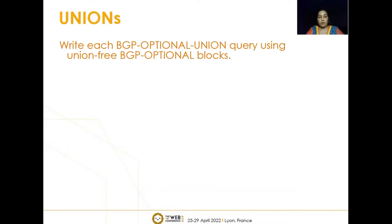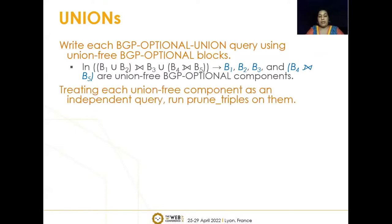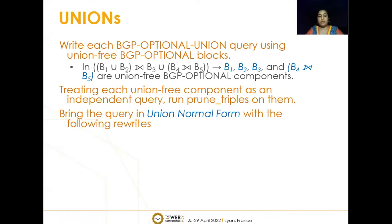Now we come to the main contributions in this paper. First we deal with the SPARQL union construct. For dealing with SPARQL unions, we write each BGP optional union query using union-free BGP optional blocks. For example, a query B1 union B2 left outer join B3, unioned with B4 left outer join B5 — here B1, B2, B3, and B4 left outer join B5 together are the union-free BGP optional components. Treating each union-free component as an independent query, we run prune triples on them.